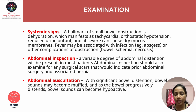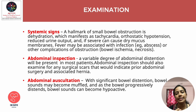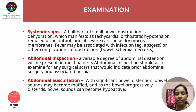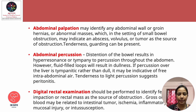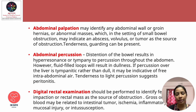In cases of prior surgery, adhesions may be the cause of obstruction, so look for any surgical scars. Patients most commonly have a distended abdomen. On auscultation, with significant bowel distension, bowel sounds may be muffled and progressively hypoactive. On palpation, identify any abdominal wall or groin hernias and abnormal masses, which in the setting of small bowel obstruction may indicate an abscess, volvulus, or tumor as the source.